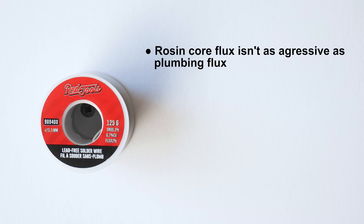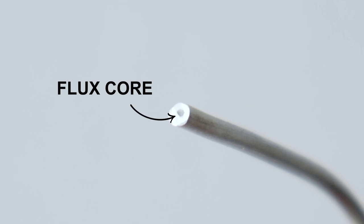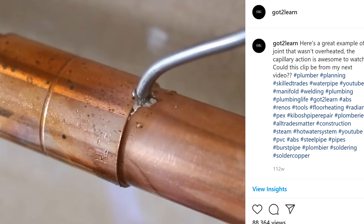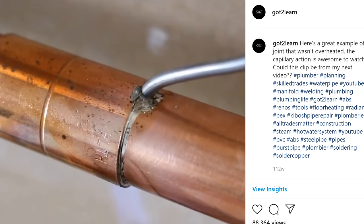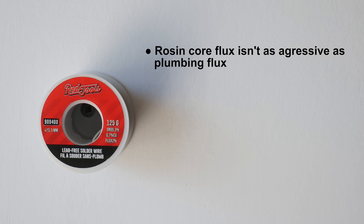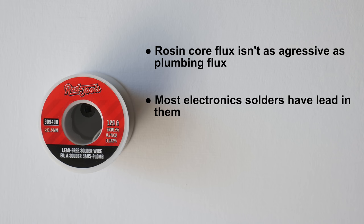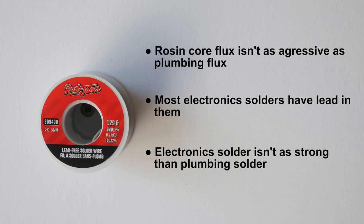The reasons you don't want to use electronic solder on plumbing are: rosin core flux is not nearly as aggressive as plumbing flux, so capillary action wouldn't be as good and might cause a leak. The other reason is that most electronic solder have lead in them, which is prohibited on potable lines. And lastly, the fact that it's weaker than plumbing solder. The joint wouldn't be as strong, which could cause leaks in the future, so just use the proper solder to be safe.